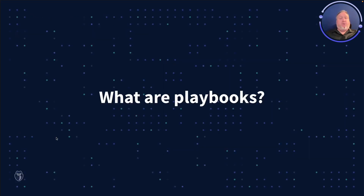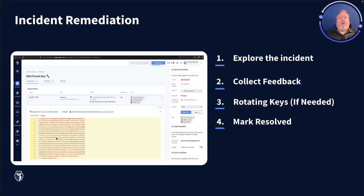So what are playbooks? The GitGuardian platform alerts you when hard-coded secrets are detected in your source code. Within the dashboard, on the right-hand side of any incident view, we provide recommended steps to explore the incident, collect needed feedback, as well as tips on remediating the incident.